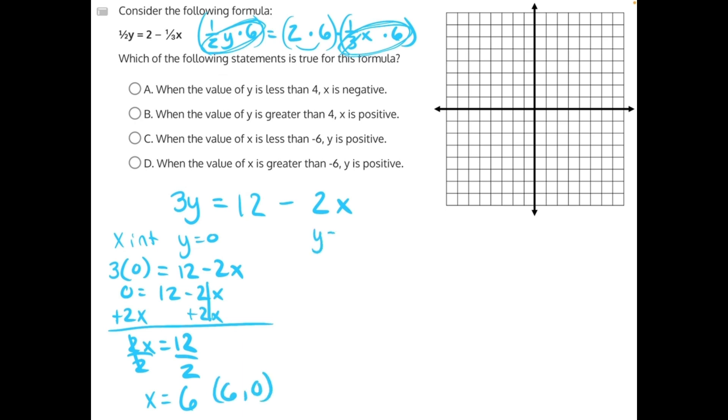Now let's find our y-intercept, or where x equals 0. 3y equals 12 minus 2 times 0. 2 times 0 is just 0, so this will cancel, leaving us with 3y equals 12.